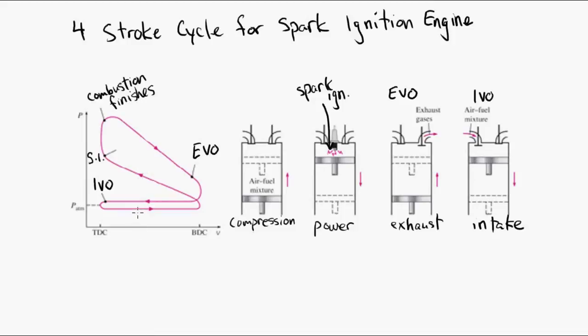So here's everything labeled on the PV diagram. Where the valves open, where the spark ignition occurs, where combustion finishes, and here are the four strokes labeled on the curve.